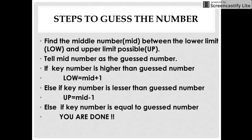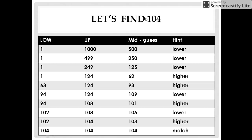Let us see with the help of an example. Suppose your friend assumes the key number as 104. According to those steps, we first find out the middle number between our lower limit that is 1 and the upper limit that is 1000. The middle number is 500.